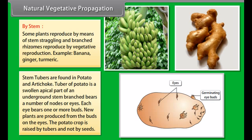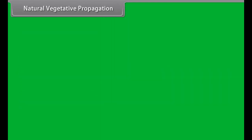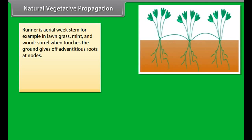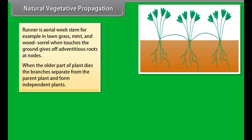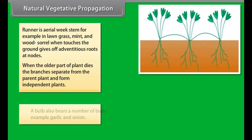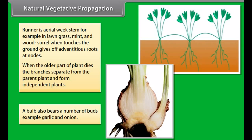Some plants reproduce by means of stem. Straggling and branched rhizomes reproduce by vegetative reproduction, for example banana, ginger, and turmeric. Stem tubers are found in potato and artichoke. The tuber of a potato is a swollen apical part of an underground stem bearing a number of nodes or eyes. Each eye bears one or more buds. New plants are produced from the buds on the eyes. The potato crop is raised by tubers and not by seeds.